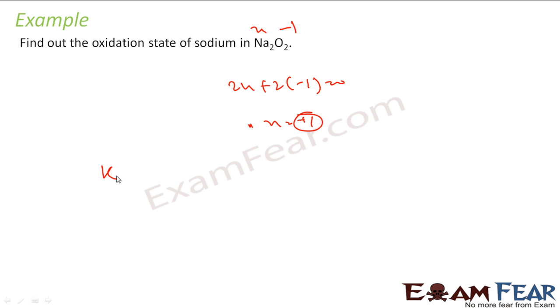In one of the examples, I told KO2 to be peroxide but superoxide actually. There we told it was peroxide but it is superoxide.